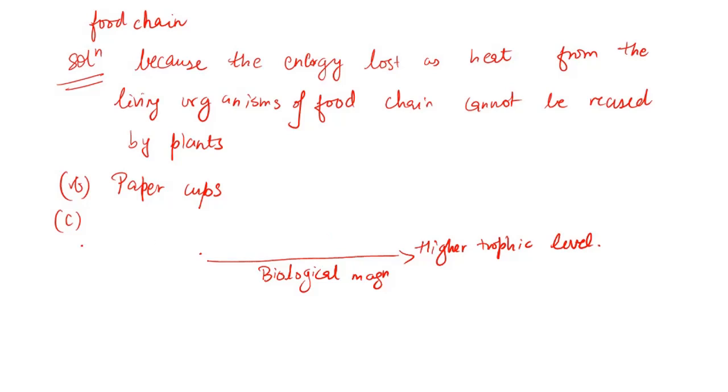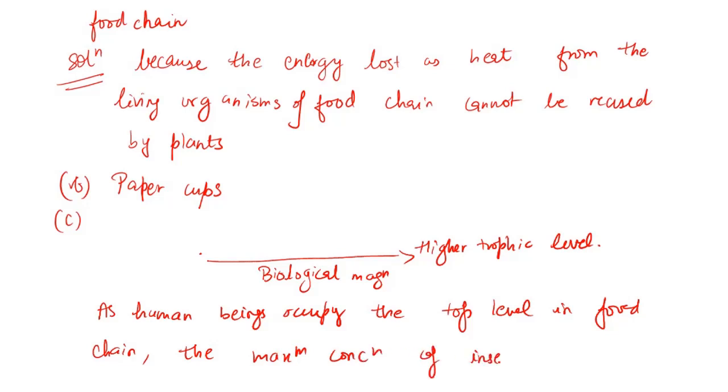So yes, this is what you can write. What you can write is as human beings occupy the top level in food chain, the maximum concentration of insecticides get accumulated in our bodies or you can write in human bodies. And this process is known as biological magnification.